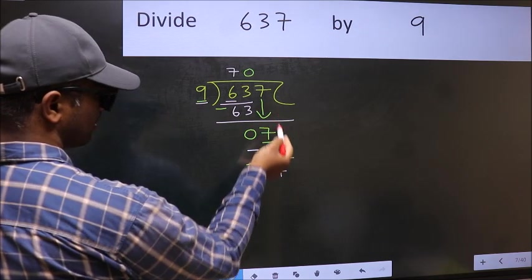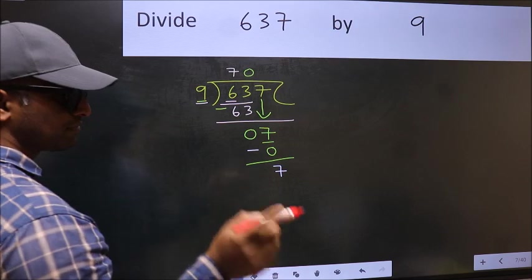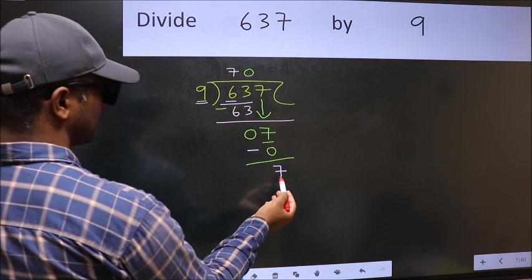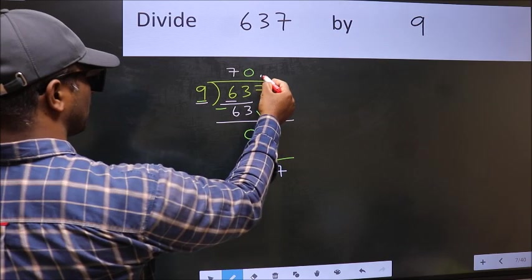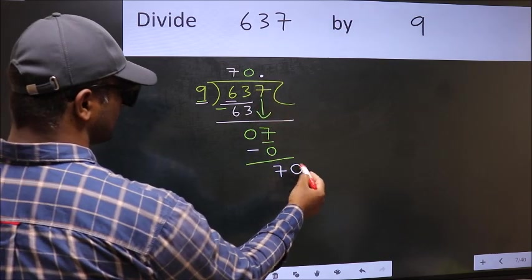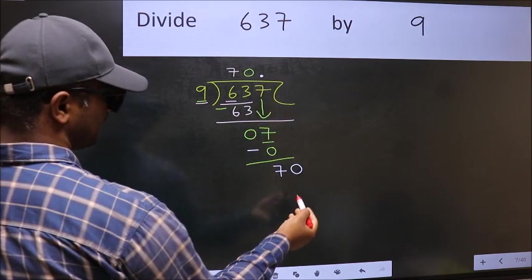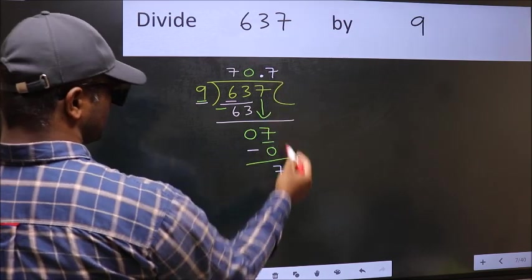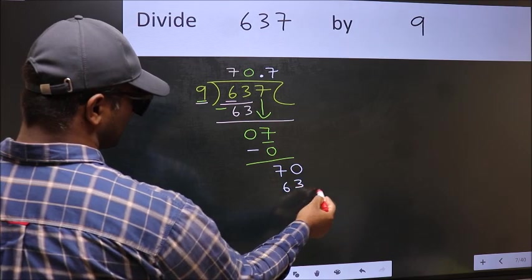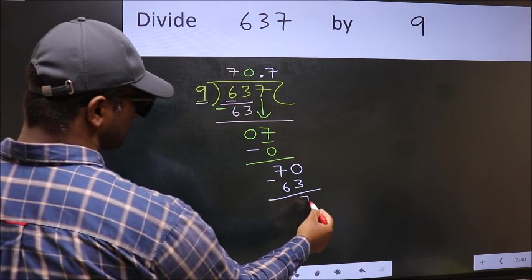Over here, we did not bring any number down, and 7 is smaller than 9. So now you can put a decimal point and take 0. So, 70. A number close to 70 in the 9 table is 9 times 7, which is 63. Now, you should subtract. We get 7.